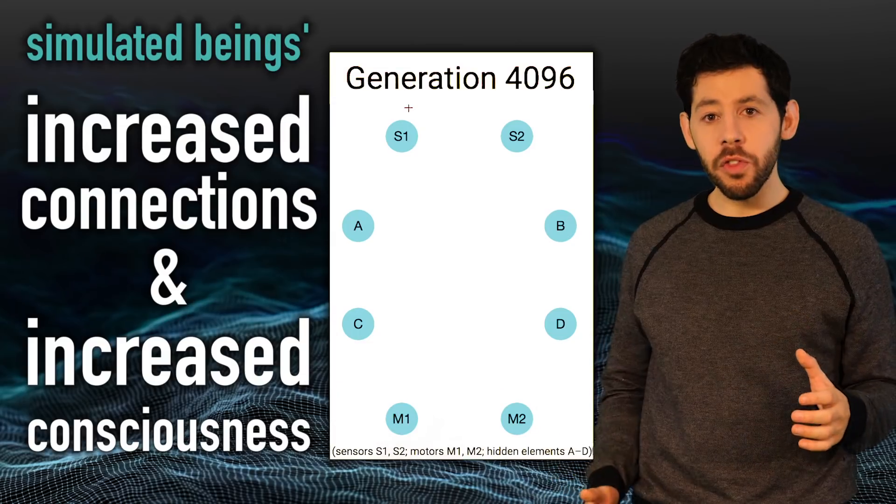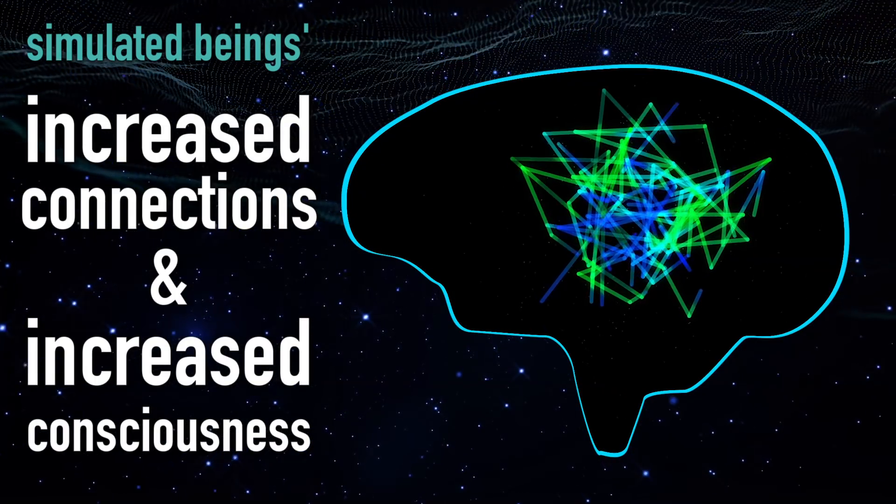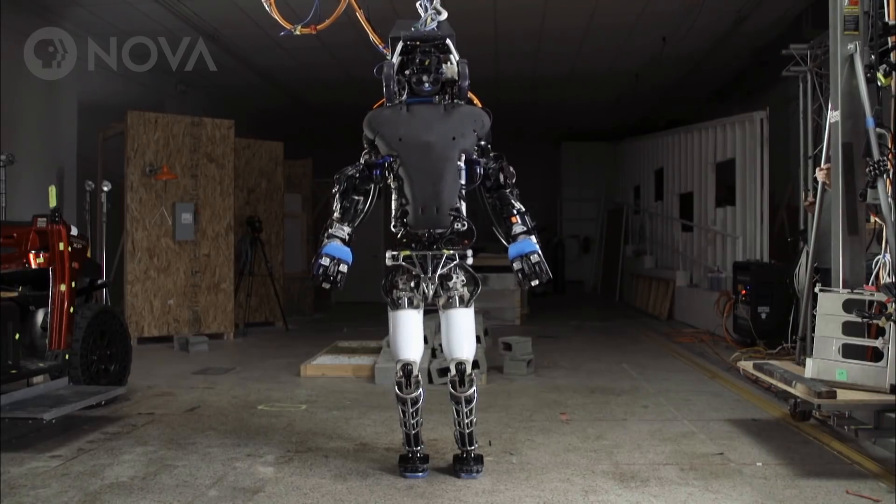If we do build robots with neuromorphic architecture, beware. Because at first, they might seem harmless. But if they evolve the way that simulations imply, then from generation to generation, they'll become more and more conscious, surpassing us and possibly developing their own goals.